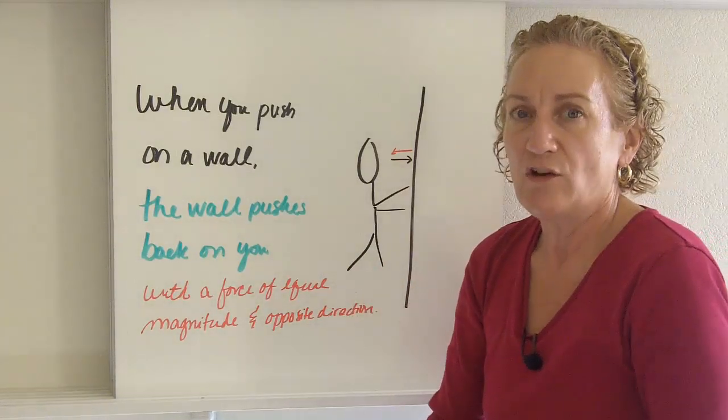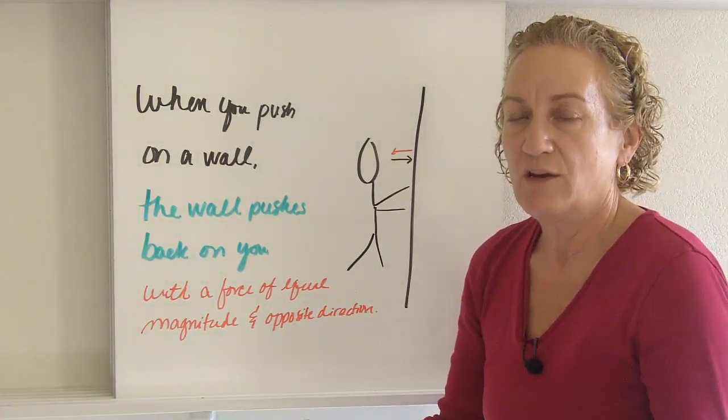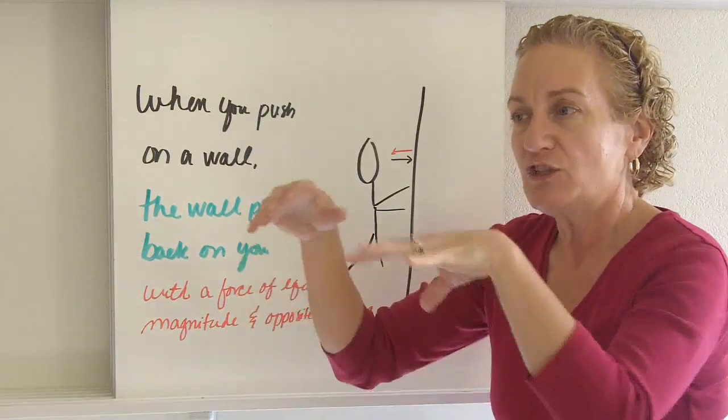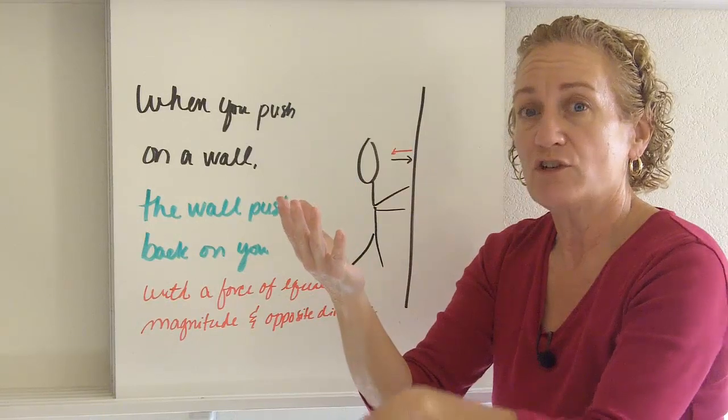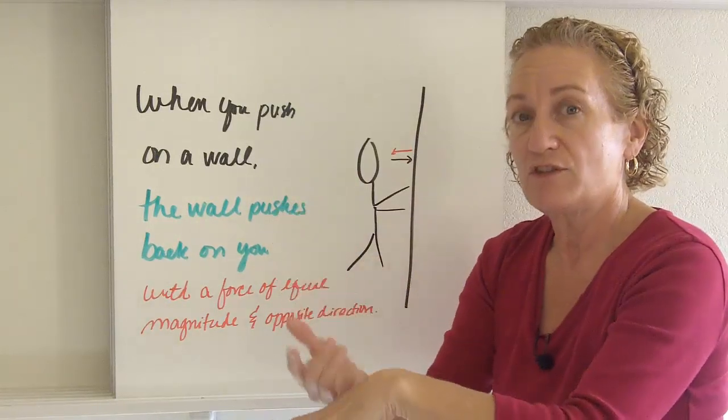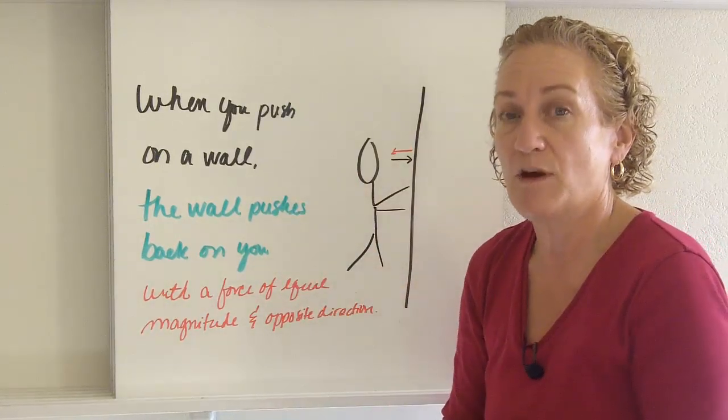Think about the movie Shallow Hal where the girl sat on the chair in a restaurant and the chair broke. It's because she was pushing down with more force than the chair could push up with. When she hit the floor, she stopped because she pushed down with a certain force and the floor pushed up with that same amount of force.